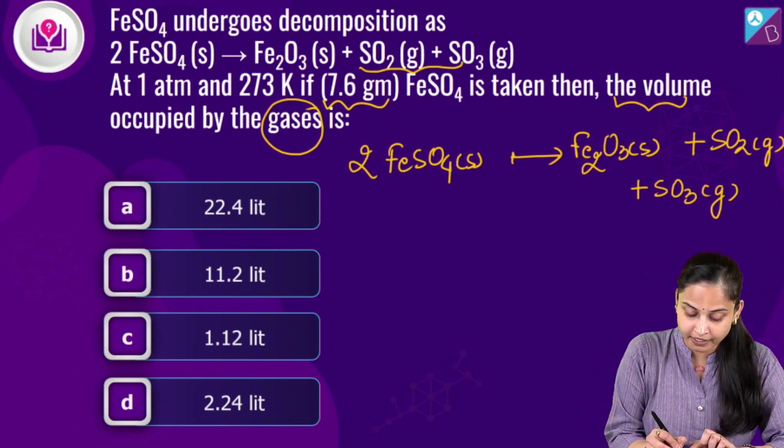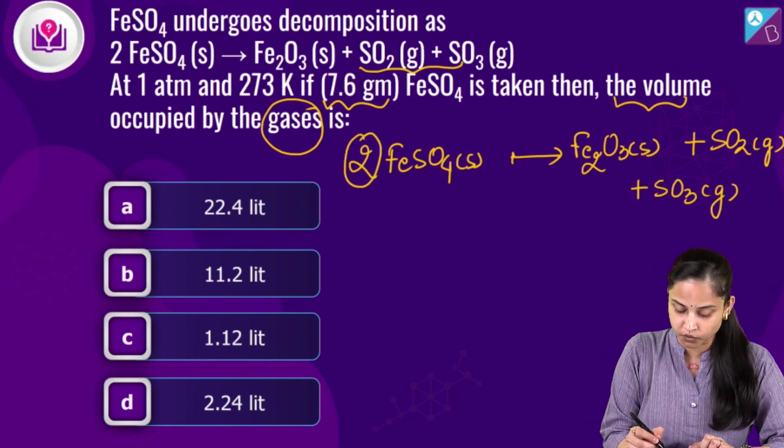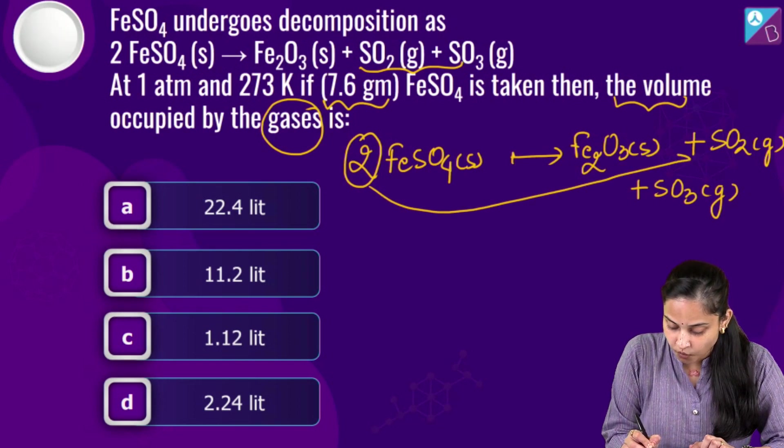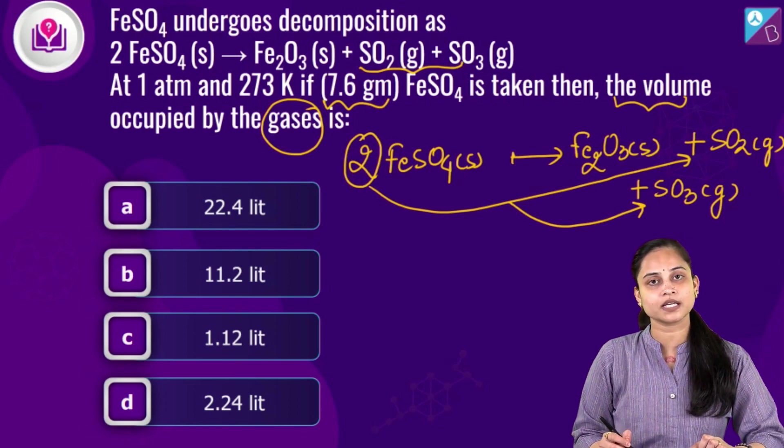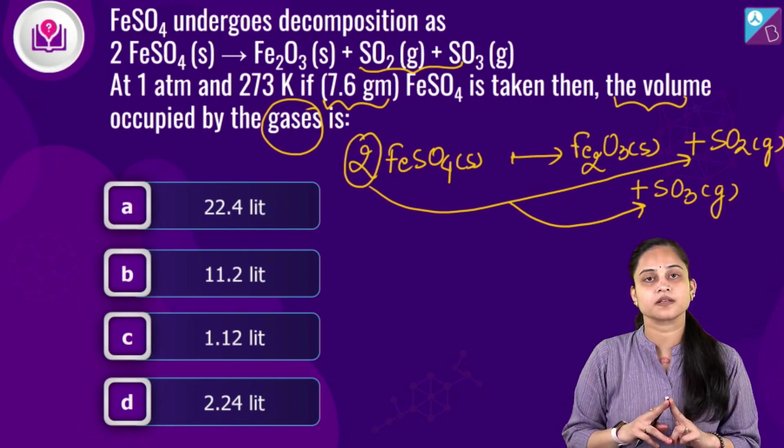From the stoichiometry of this particular reaction, what we actually find is that two moles of FeSO₄ is actually giving us one mole of sulphur dioxide as well as one mole of sulphur trioxide.